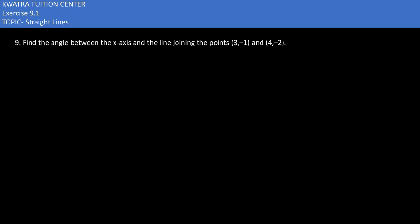Now the next one says find the angle between the x-axis and the line joining the points. Points are these two. And what do we need to find the angle? So what do we need to find out first?